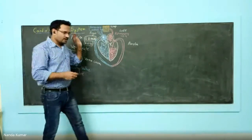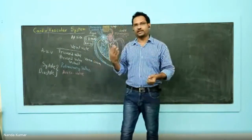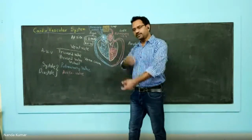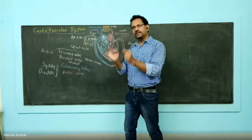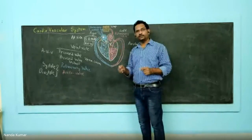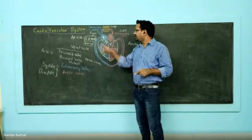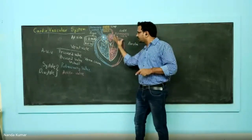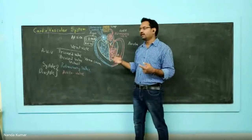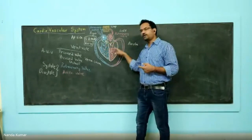For cardiac conduction to occur, there are three steps. First, signal initiation — the signal starts from the SA node, where the nodal cells initiate the signal. After that, the signal is propagated to the entire atria. This is called signal propagation. Again, from the AV node, it is propagated to the entire ventricles.